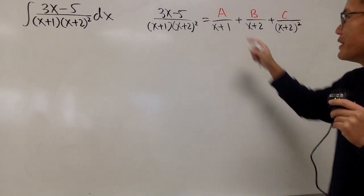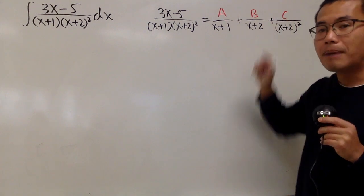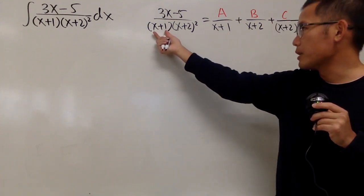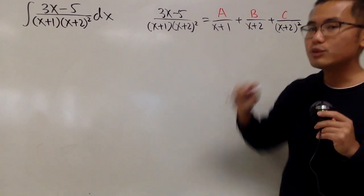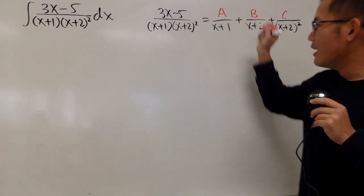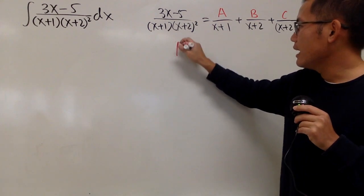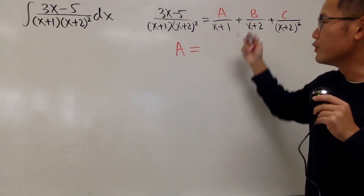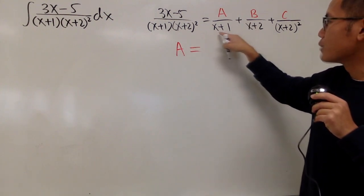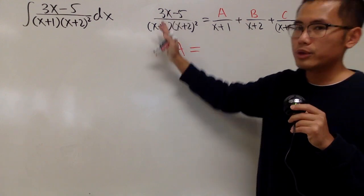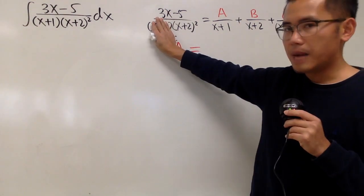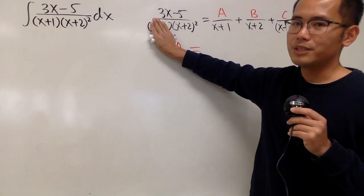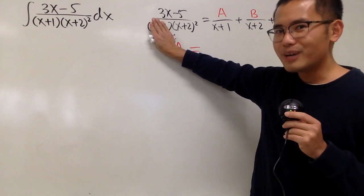The good news is we can actually solve for A and C using the cover-up method, because we have the same denominator. To find A, notice the denominator is x plus 1. We go back to the original, cover that same denominator, and ask ourselves how to make x plus 1 equal to zero — x has to be negative 1.